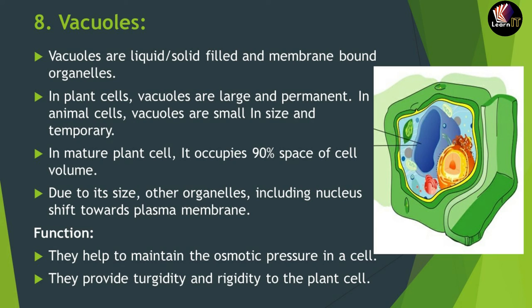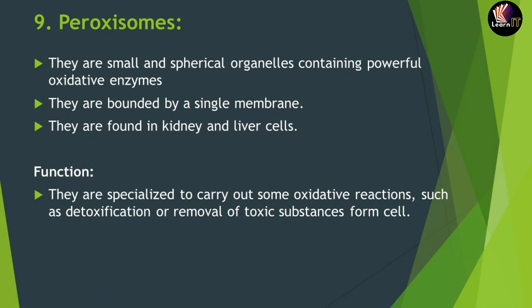The last organelle is the peroxisome. Peroxisomes are small spherical organelles containing powerful oxidative enzymes that help in the detoxification or removal of toxic substances from the cell. They are bounded by only a single membrane and are always found in kidney and liver cells. Their function is to carry out oxidative reactions, meaning detoxification — the removal of any toxic substances that enter or are manufactured inside the cell.